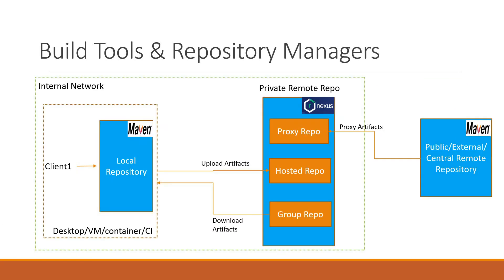In the previous videos, we have already discussed about the types of repositories in Nexus. Nexus has three types of repositories: proxy repository, hosted repository, and group repository. We use hosted repositories for uploading artifacts from Maven clients. This hosted repository can contain snapshots or releases. In this video, we will see how to upload artifacts to a Nexus hosted repository. If you want to know more about Nexus repositories, please follow the link in the description below.